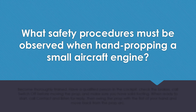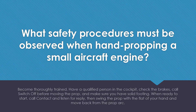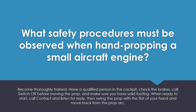What safety procedures must be observed when hand propping a small aircraft engine? Become thoroughly trained. Have a qualified person in the cockpit, check the brakes, call 'switch off' before moving the prop, and make sure that you have solid footing. When ready to start, call 'contact' and listen for the reply. Then swing the prop with the flat of your hand and move back from the prop arc.